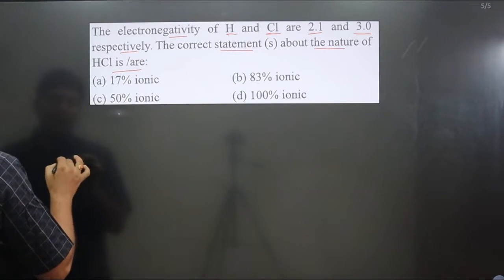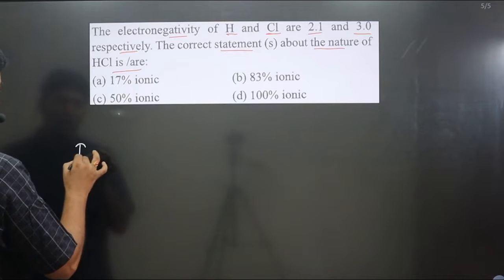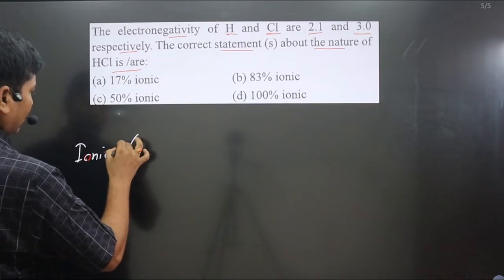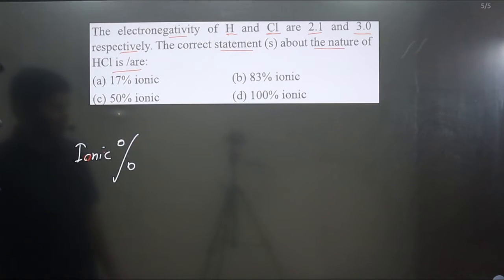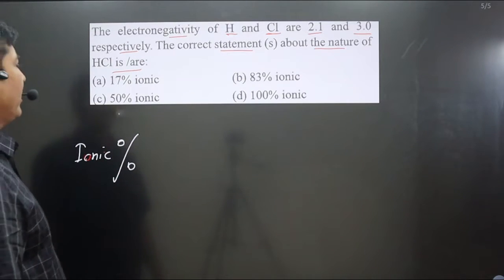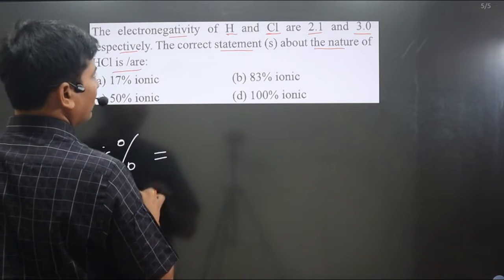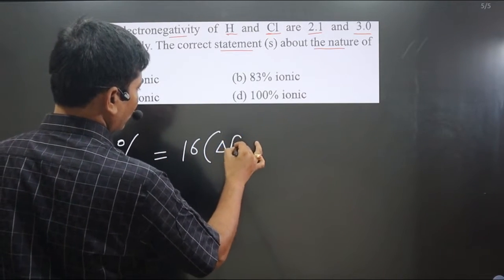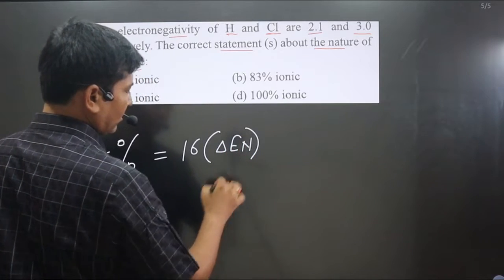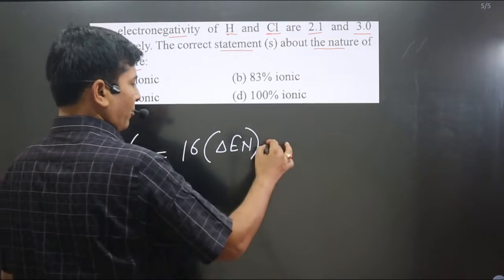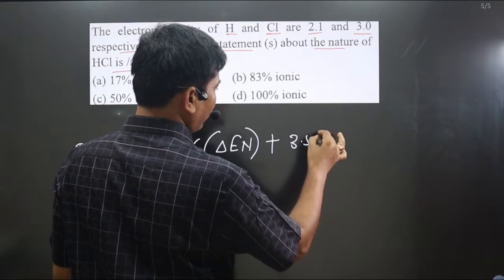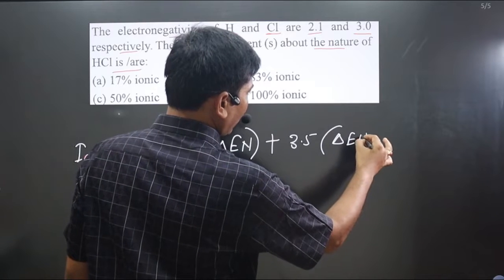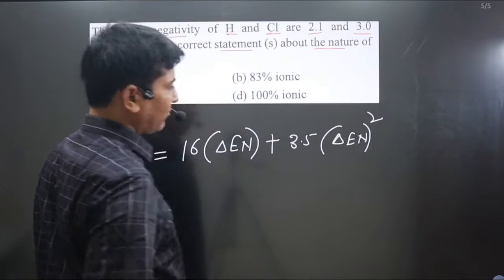The ionic percentage formula is: 16 times the difference in electronegativity of the two elements, plus 3.5 times the difference in electronegativity of the elements squared.